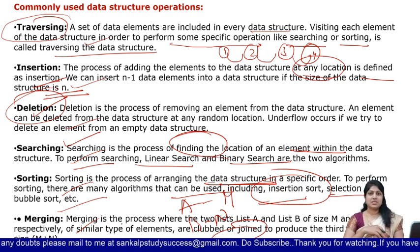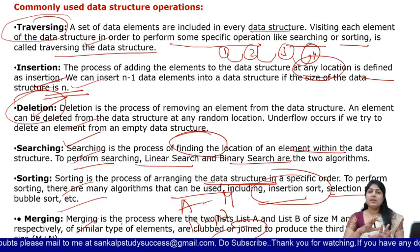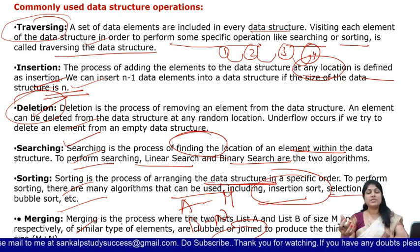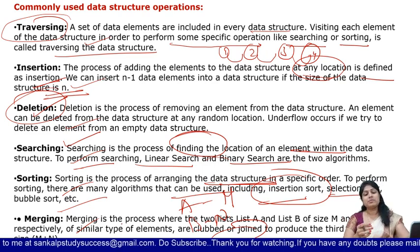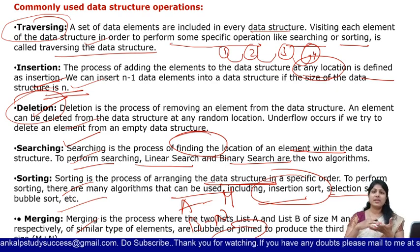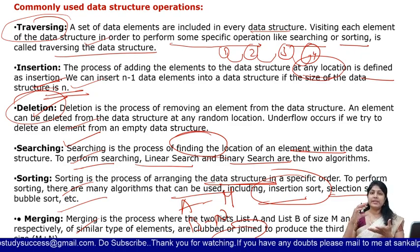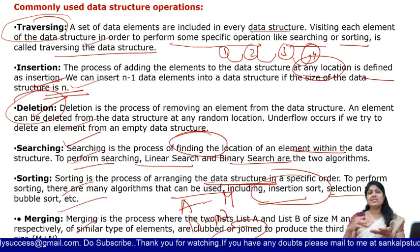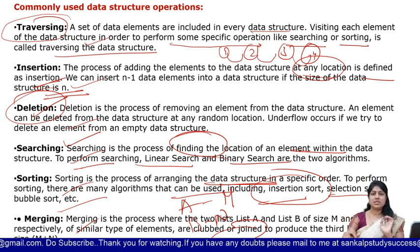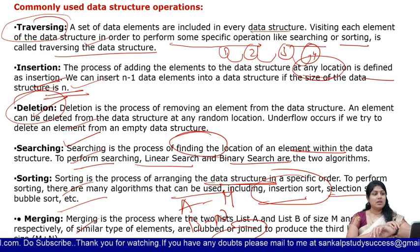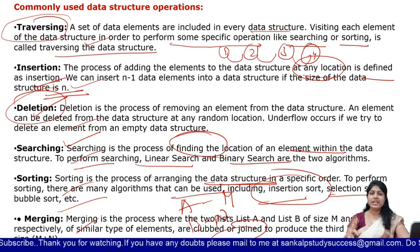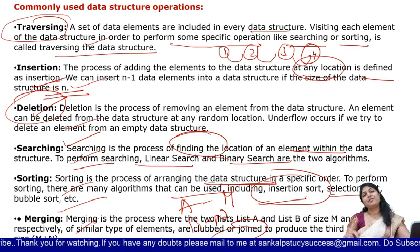So these are all the common operations that we can perform on data structures. Up to here: abstract data type and what common operations are performed. Next I will explain linked list — node creation, linked list operations. I'll explain single linked list, double linked list, and circular linked list one by one. So I'll stop here. Hope you understand. If you have any doubts, please mail to sangakstudysuccess@gmail.com. Thank you for watching, bye bye.